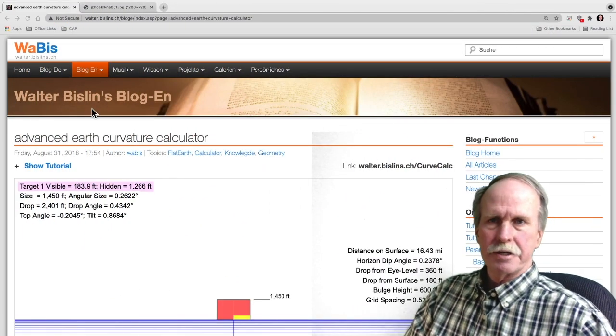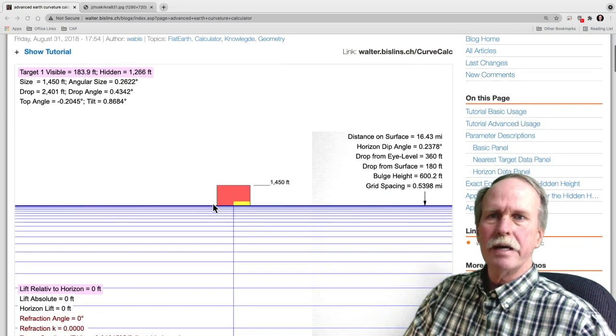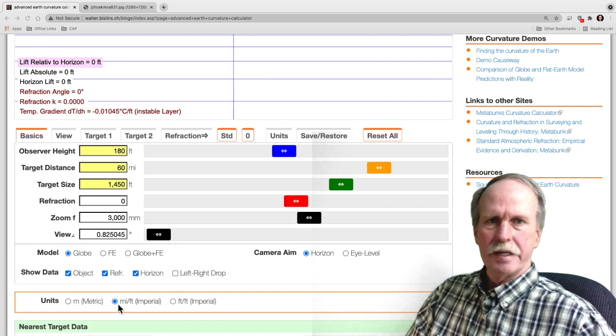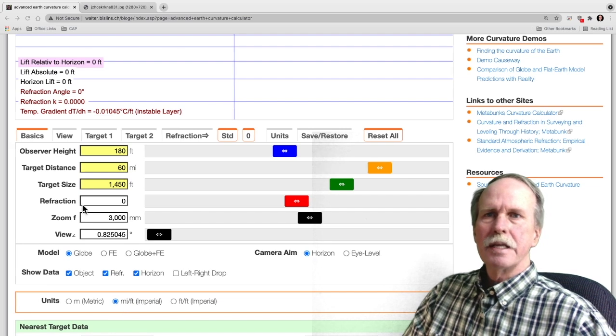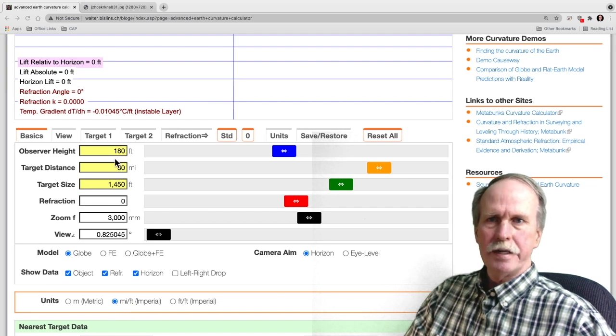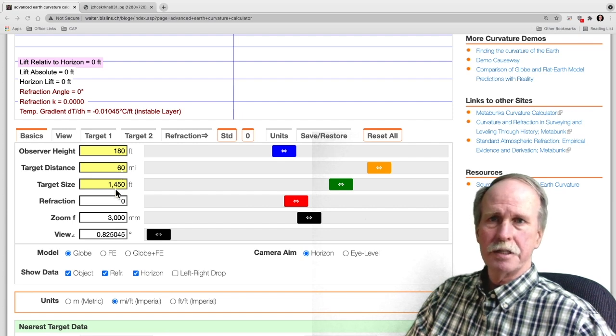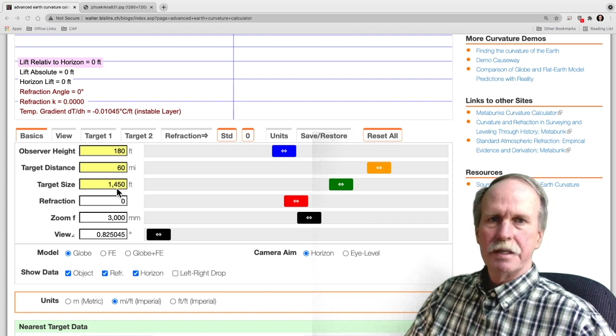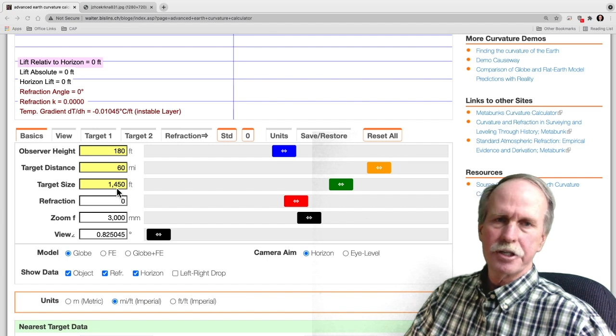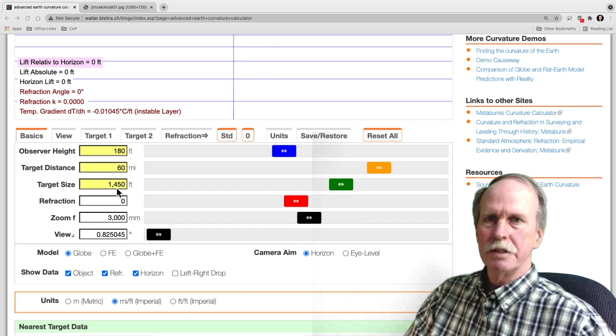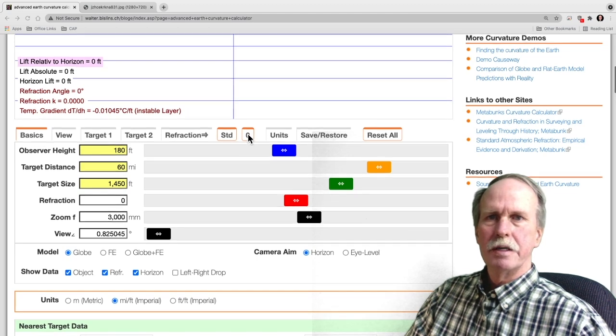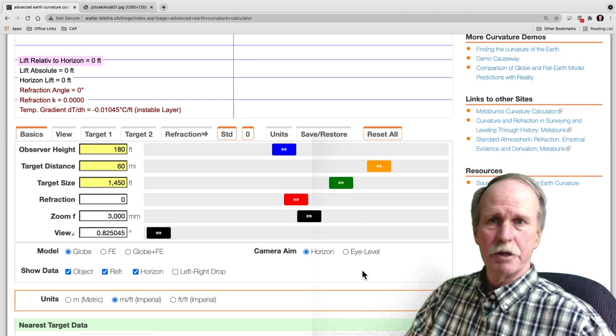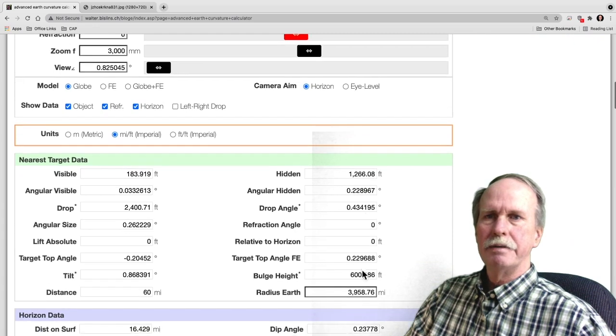Okay so here's Walter Bislin's Advanced Earth Curve Calculator. Now if we go down here there's a couple of settings that we need to change. First you'll notice that I made it miles and feet because Murica. Second the observer height is put in at a hundred and eighty feet. The target distance is 60 miles and the target size, well the Willis Tower, the old Sears Tower, is fourteen hundred and fifty feet tall. Now since we can clearly see the Willis Tower in the picture that just makes a nice reference for us to use. So let's go ahead and do a couple of things here. First of all let's put in zero refraction. Now the reason that I'm going to put in zero refraction will be apparent in a moment.